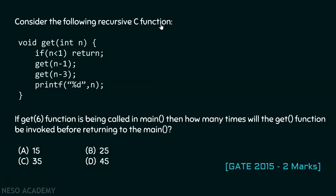Consider the following recursive C function. Inside this function you are calling this function again — that is why it is a recursive procedure. Inside this function we have an if construct which says if n is less than one then you should simply return. Otherwise, you call get(n-1), then after that you call get(n-3), and then after that you call the printf function which prints the value of n.